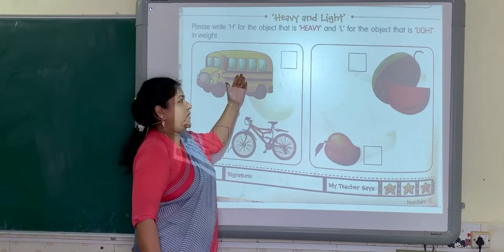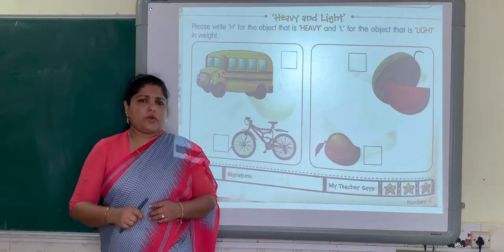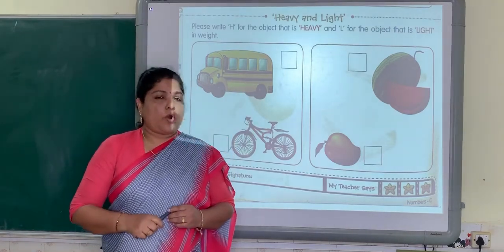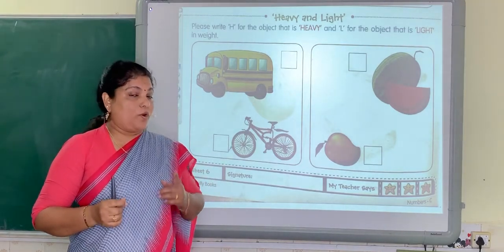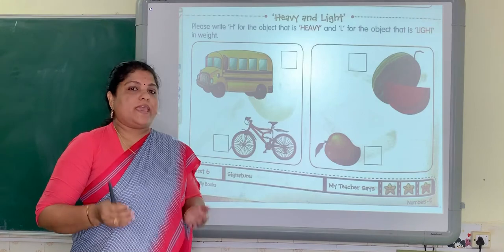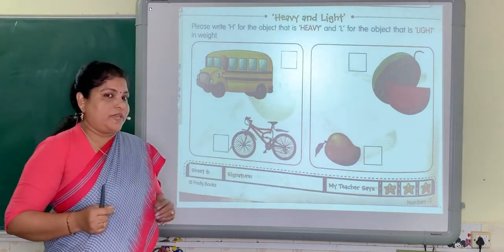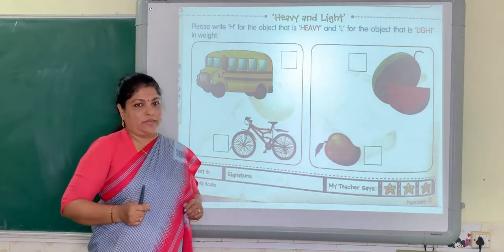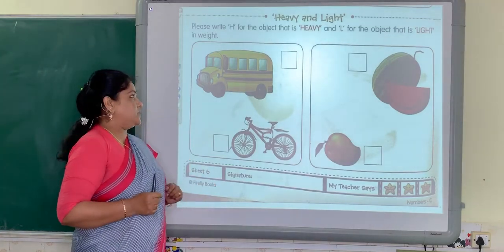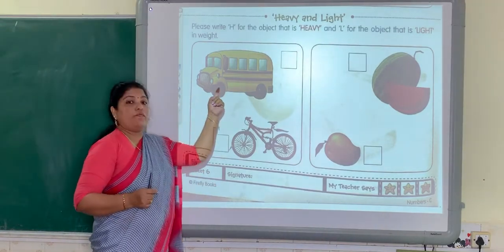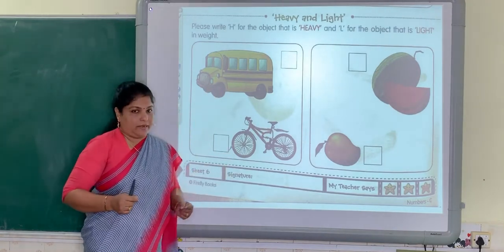This is the concept of heavy and light. Children, have you ever thought that some objects can be lifted easily but some objects cannot be lifted easily? That is because different objects have different weight. Now here is one van and one cycle.